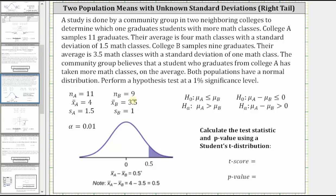And now, let's set up the alternative and null hypotheses. The community group believes that a student who graduates from college A has taken more math classes on average. And therefore, the alternative hypothesis is mu sub A is greater than mu sub B. And if this isn't true, mu sub A must be less than or equal to mu sub B, which is the null hypothesis.